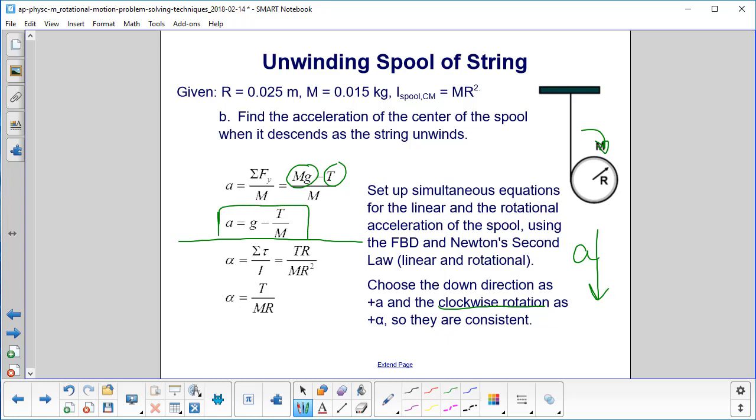For the angular acceleration, that's equal to the sum of the torques over the moment of inertia. So our torque is provided by this tension force acting in that direction, which will tend to give you a clockwise rotation. So that's in the positive alpha direction. So our torque will have a positive identity. It'll be T times R, the tension times the distance from the axis of rotation. We then substitute in our moment of inertia that was given here because we are rotating about the center of mass of the spool, do a little algebra, and we have our second simultaneous equation.